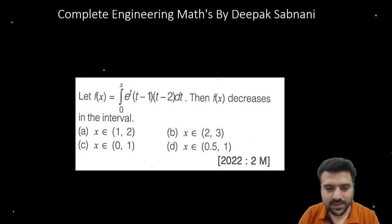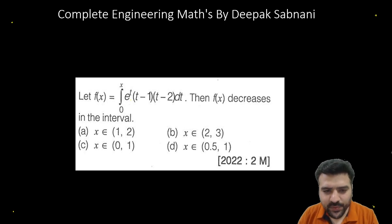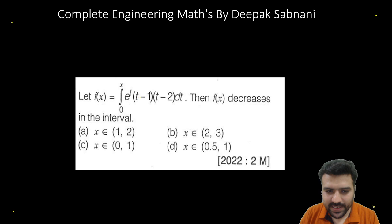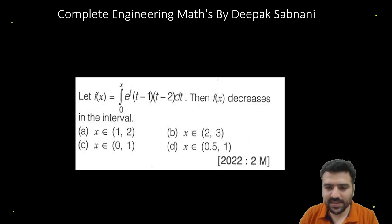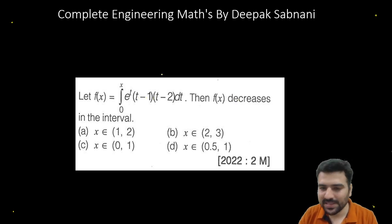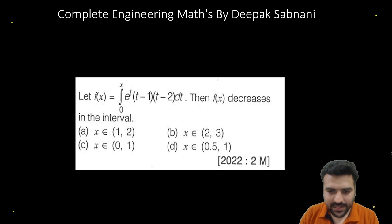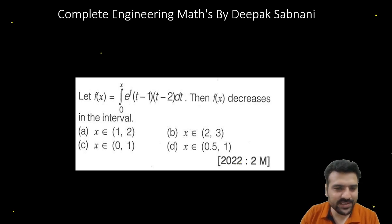This question: f(x) is equal to the integration from 0 to x of e to the power t times (t minus 1)(t minus 2) dt. We need to find the interval in which f(x) decreases. This was asked in GATE 2022 and carries two marks.